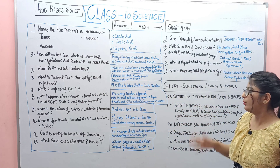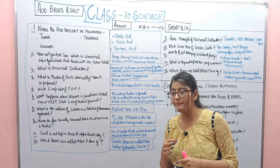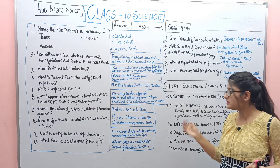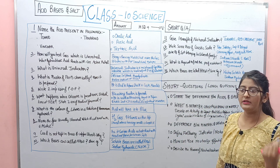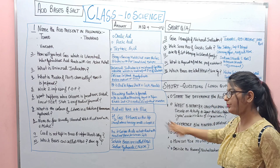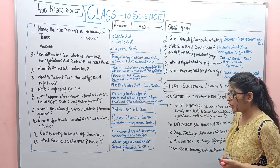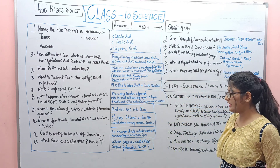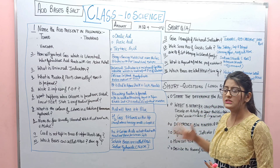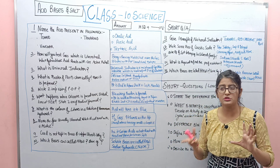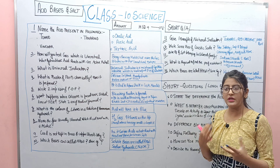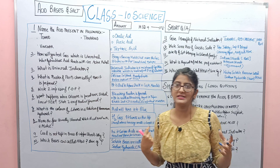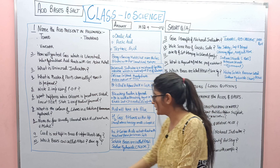Question 8: Name the gas usually liberated when dilute acid reacts with a metal. Hydrogen gas is liberated, and to check for hydrogen gas, we bring a burning matchstick near it — it creates a pop sound, indicating the presence of hydrogen gas. Question 9: Curd is not kept in brass and copper utensils. Why? Because curd contains acids which react with the metals and form poisonous salts that are harmful to the human body. So never store curd in copper and brass utensils.